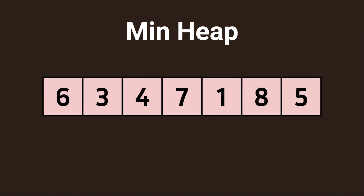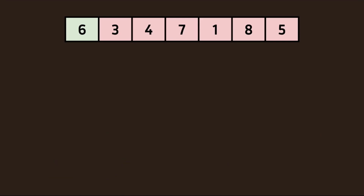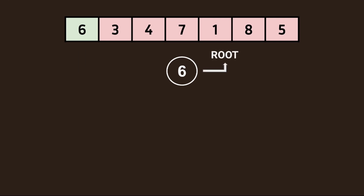In this tutorial, we'll be taking a look at the following array that contains 7 integers in random order. Let's move this to the top and begin constructing the min heap. We'll start with the first index in the array, which contains the number 6. This will be our root node.